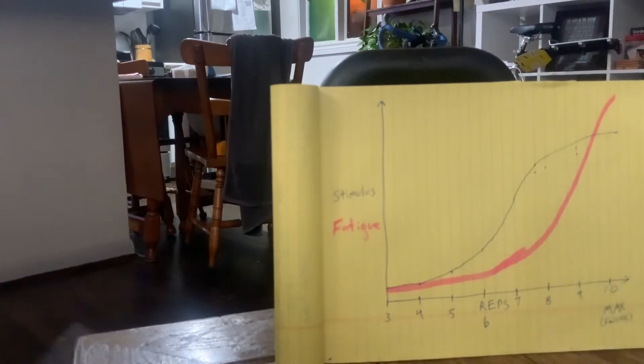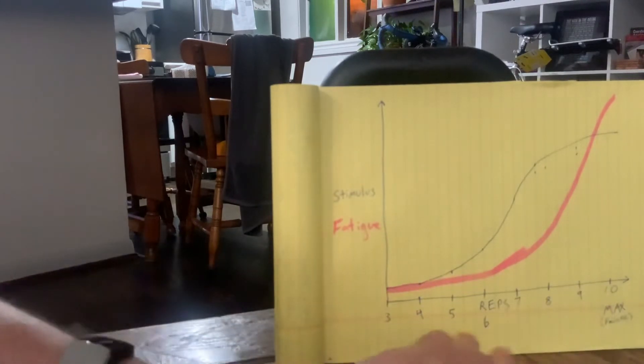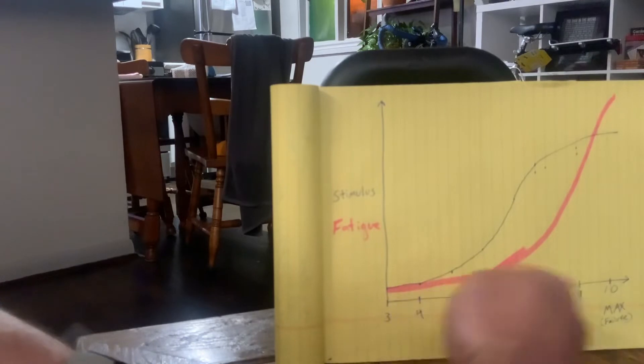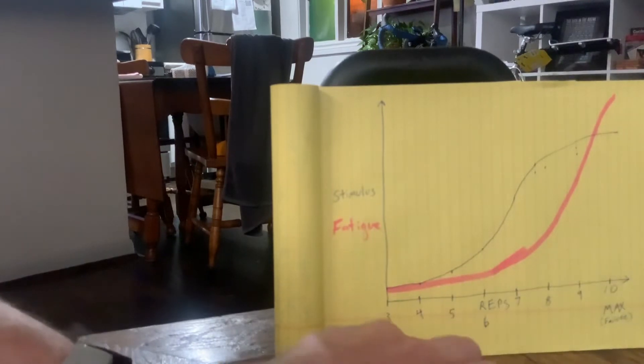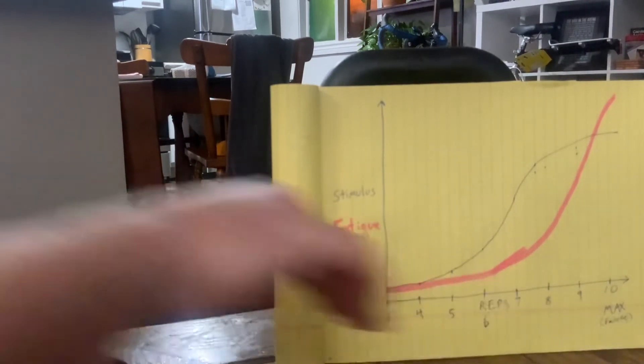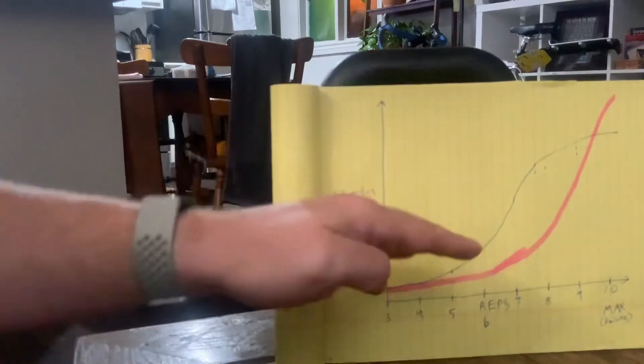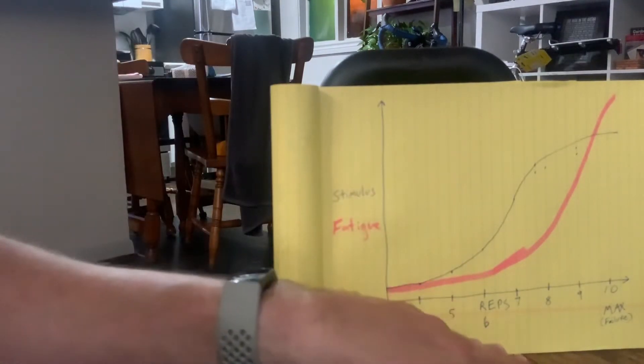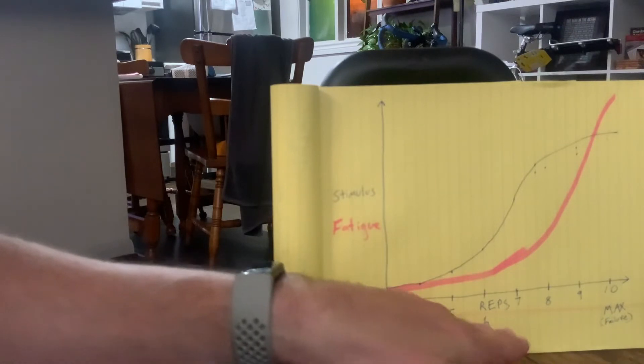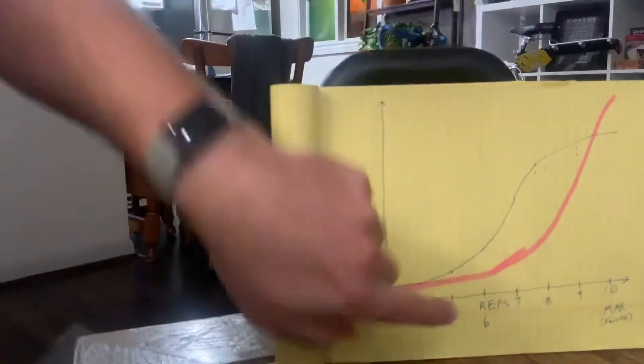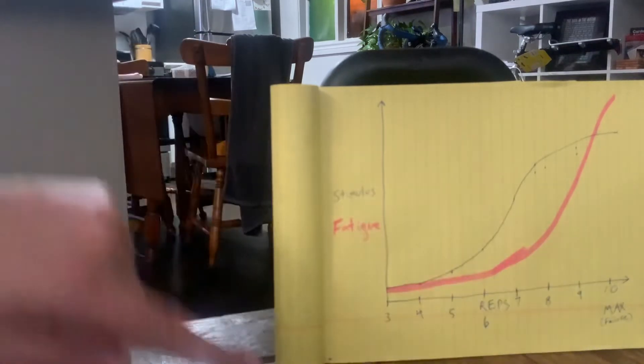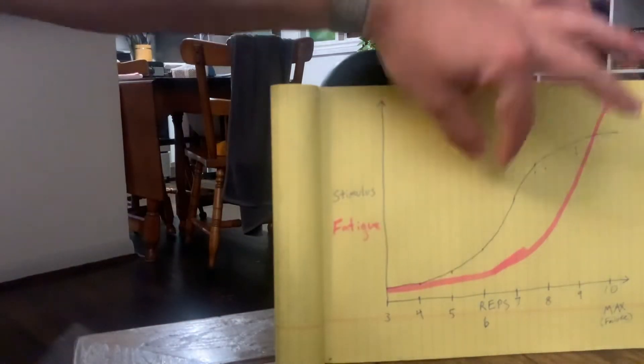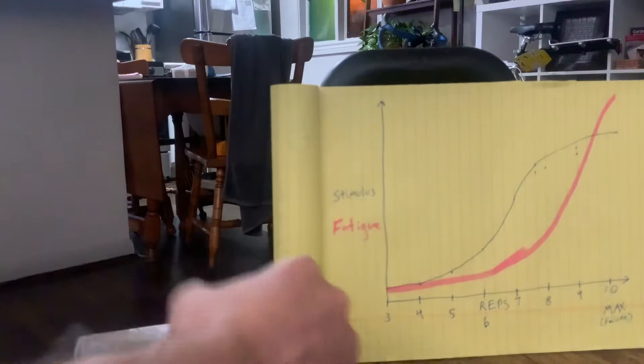So the additional benefit from going this close to failure is still there, but it starts to level off a little bit. So basically anywhere if we're in this five to ten, and even closer six to ten range, is great from a stimulus perspective. I would really say that we want to be at least within six to ten. In my preferred range, just really from seven to ten. That's just where we get the most reliable stimulus.